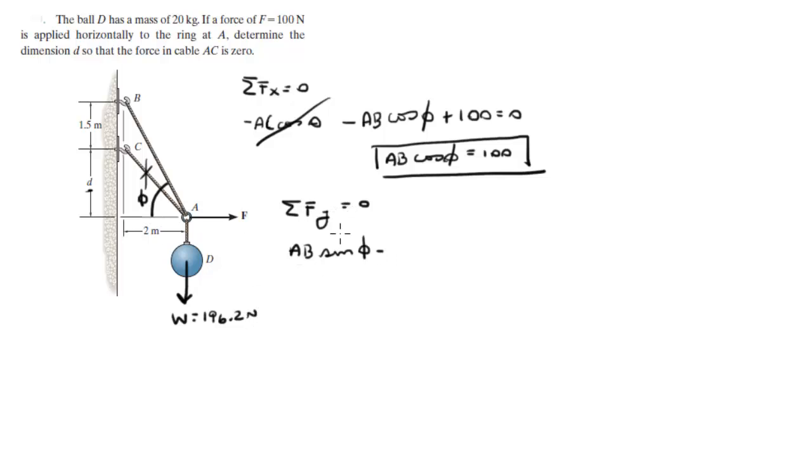So the sum of the forces in the Y is the Y component of this AB force minus 196.2 is equal to zero. So AB sin of phi is equal to 196.2.